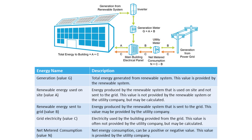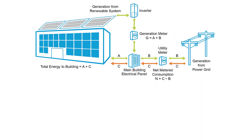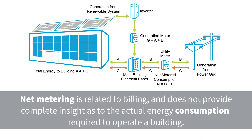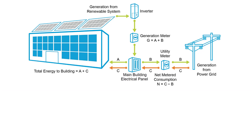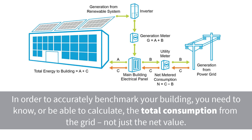A net metered value and its associated cost may be positive or negative in a given month. It is important to note, however, that the concept of net metering is primarily related to billing and does not provide complete insight as to the actual energy consumption required to operate a building. Even if a building is showing negative net metered consumption in a given month, and the customer is getting a billing credit because it sold back more energy than it consumed from the grid, the building would still have had to consume a positive amount of grid electricity during this period. In order to accurately benchmark your building, you need to know or be able to calculate the total consumption from the grid, not just the net value.